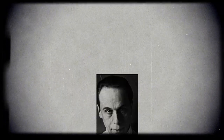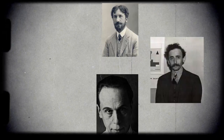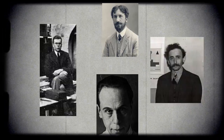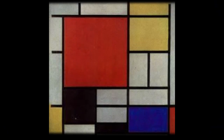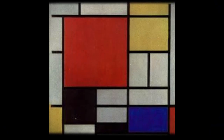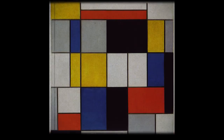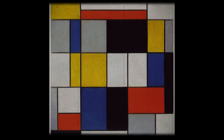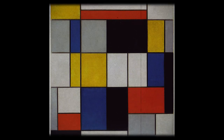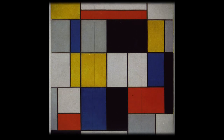De Stijl was a circle of Dutch abstract artists who promoted a style of art based on a strict geometry of horizontal and verticals. Geometric abstraction, primary colors like red, blue, yellow, along with black, white, and gray, asymmetry and balance, horizontal and vertical balance, and universalism are some of the characteristics of De Stijl art.